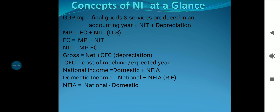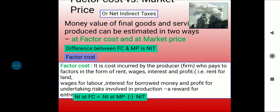Domestic income equals national income minus NFIA, that is net factor income from abroad. And NFIA equals national minus domestic. These are straightforward mathematical relationships.